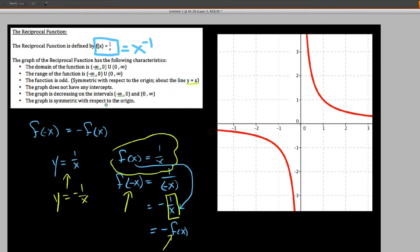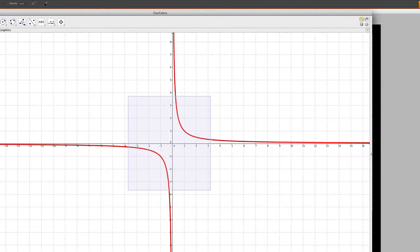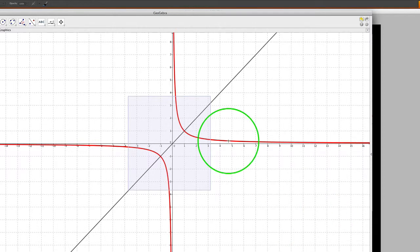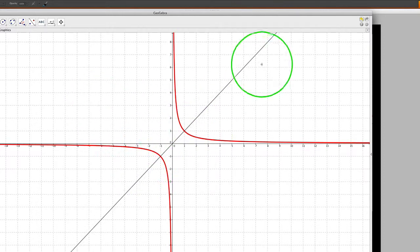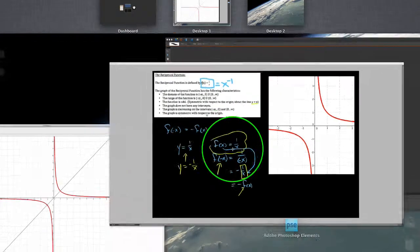Hopping back over to GeoGebra just very briefly here, if I were to graph y equals x, notice that we have some symmetry about that identity function y equals x here. You can see it folding over very nicely.